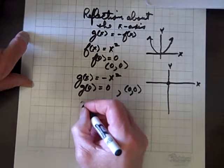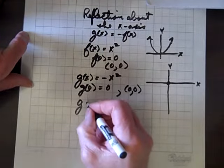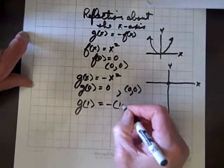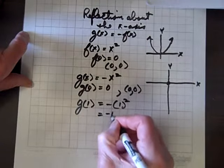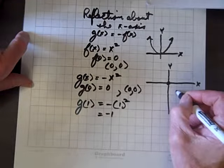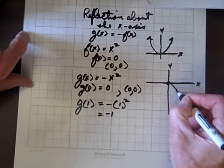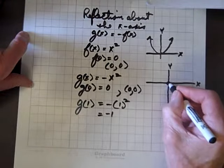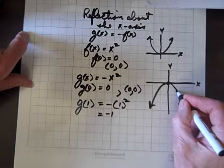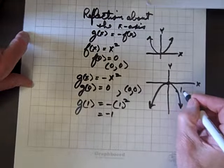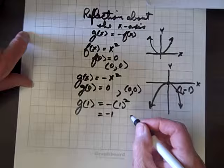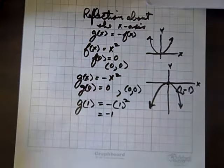Now if we look at g of 1, what we get is negative 1 squared, which is negative 1. So we'll go over 1 and down 1. And as you can see, we have a parabola, but it has been flipped over the x-axis. And we call that a reflection.